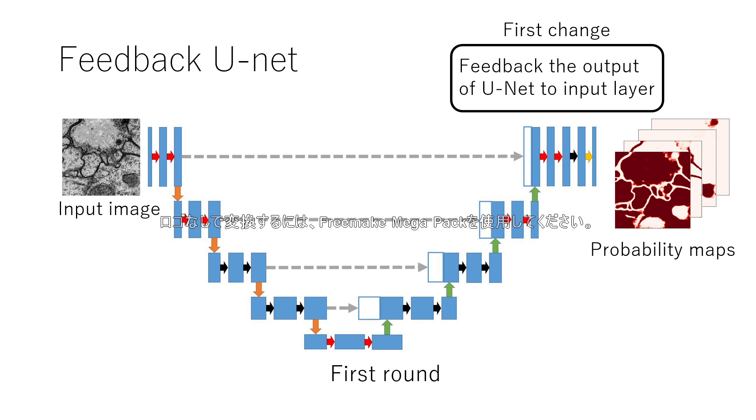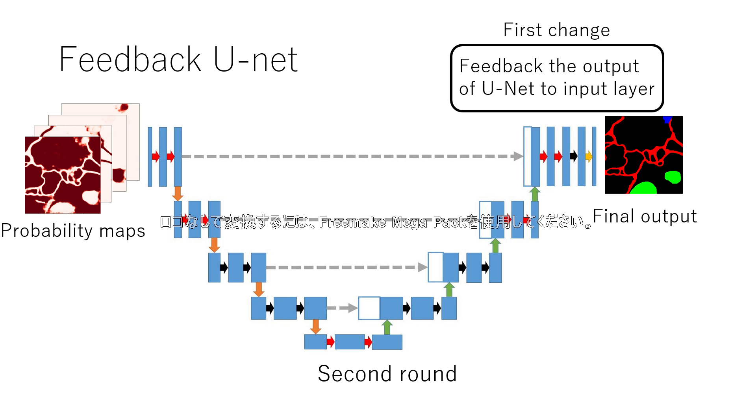In the U-Net, we acquire probability map of each class by a softmax function at the final layer. The segmentation results are obtained from this probability map. However, in our model, the probability map is feed-back once to input layer like human brain. And the output obtained on the second run is the final output and segmentation result.